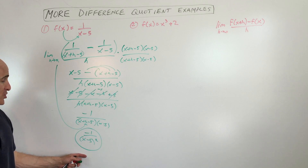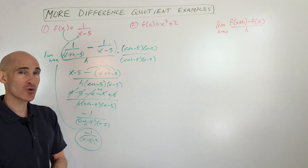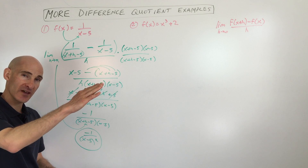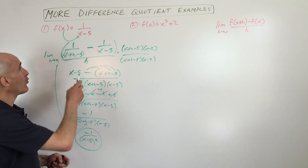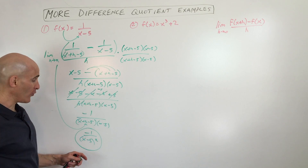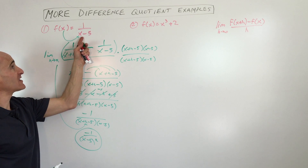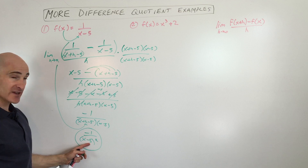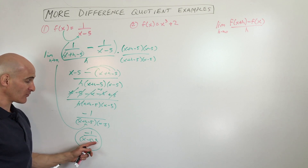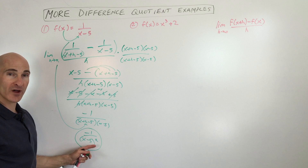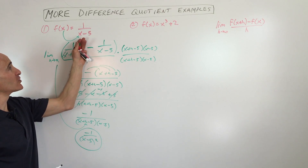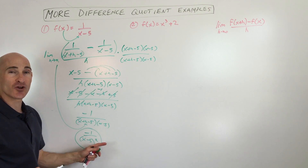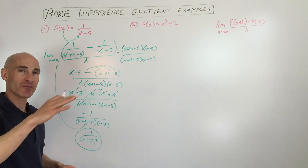So this is our difference quotient. Remember what the difference quotient is — it's a general formula for finding the slope, the rate of change, at any point along this graph. So if we wanted to find the slope of the tangent line when x is 4, it's going to be (4 minus 5), which is negative 1. Negative 1 squared is 1. Negative 1 divided by 1 is negative 1, so it's going to have a slope of negative 1. But at x equals 10 you're going to get a different slope because the graph is not going up at a continuous rate.